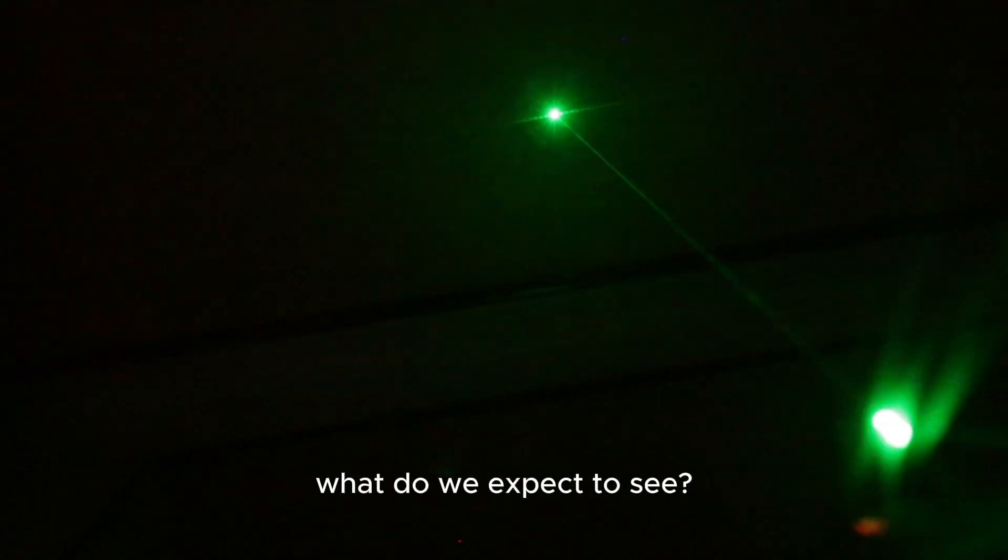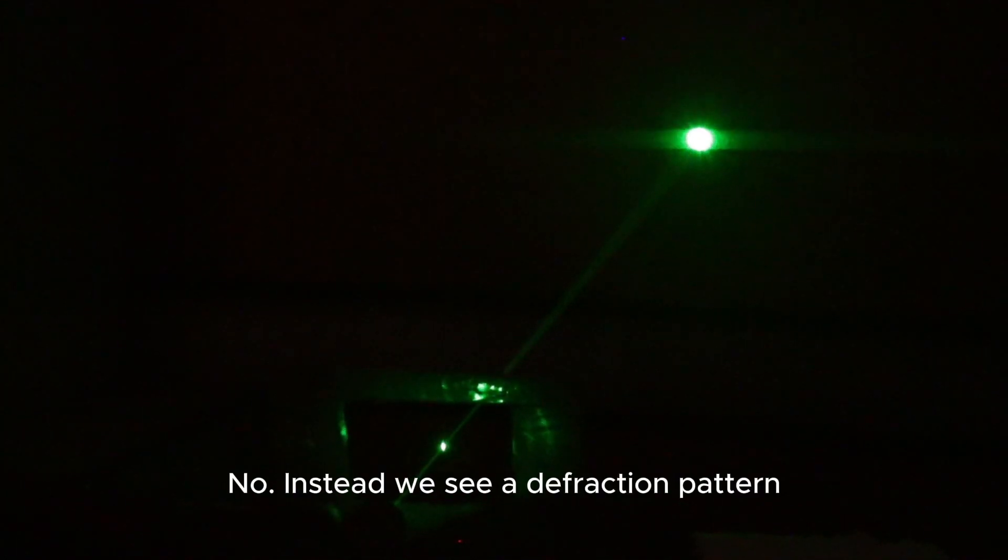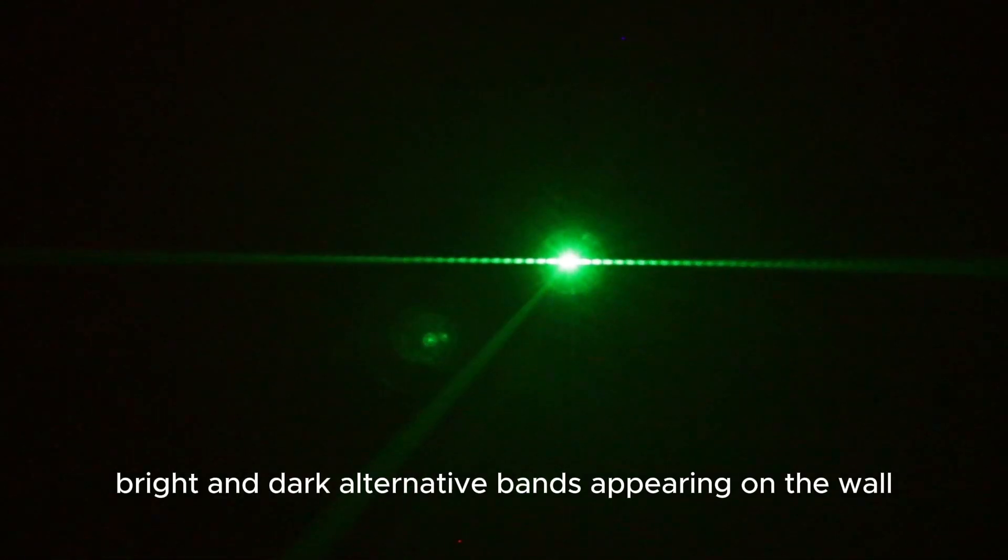When we shine the laser, what do we expect to see? A simple shadow of hair, right? No. Instead, we see a diffraction pattern. Bright and dark alternating bands appearing on the wall.